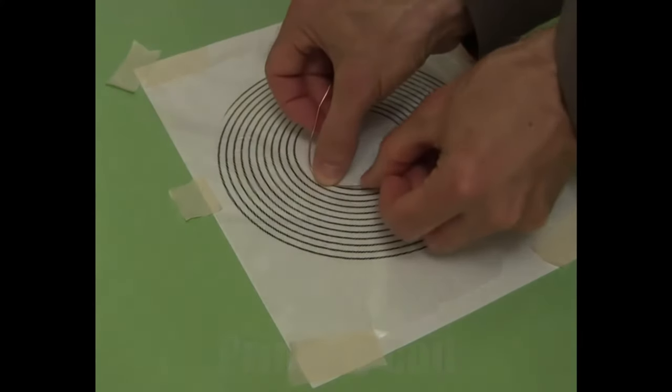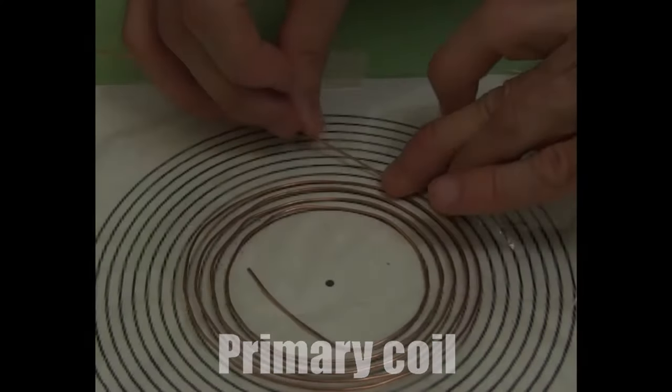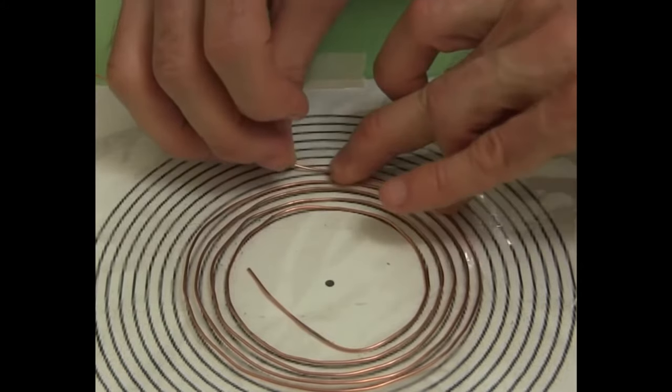The smaller coil, called the primary, should be made of thicker wire or copper tubing and is usually either flat or helical in shape.